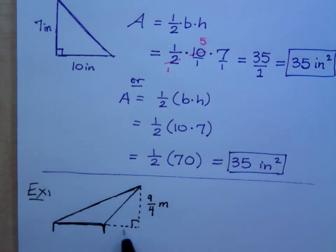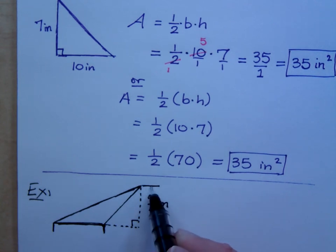We extend the base with this little dashed line so you can see what is the height. And we said the height is from the vertex down to being perpendicular with the base. So, the height here is given as 9 fourths meters.